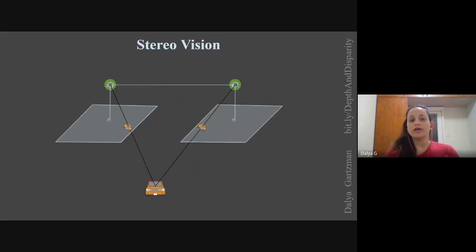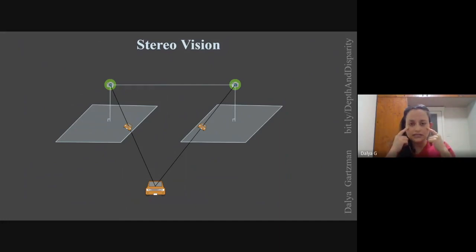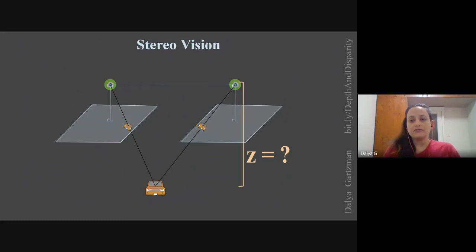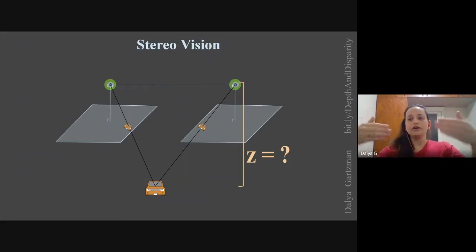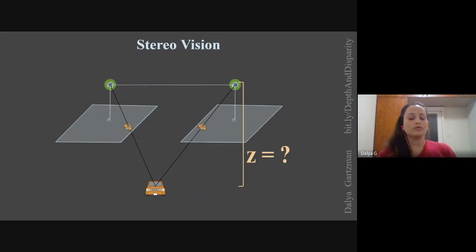We're talking about stereo vision, so we have two cameras looking at the same object. For simplicity, we'll assume the cameras are exactly parallel, looking in the same direction, and placed so that the line connecting them is exactly perpendicular to their viewing direction — like eyes looking exactly forward. This means the images from both cameras lie on the same plane. Our goal is to calculate the depth Z of an object in the common view of both cameras.